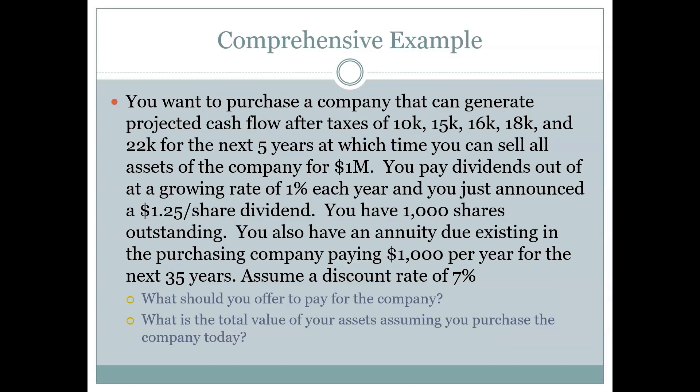We've got a big comprehensive example to work — a problem with a real-world face on it where we're talking about buying a company. The company is generating cash flows from its operations and also has annuities and perpetuities as part of its business model. We want to add all of that up and calculate the present value of the company because we're interested in buying it. Present value tells us what something is worth, so we want to know: if we add up all the values of all the assets, what would we be willing to pay for this company?